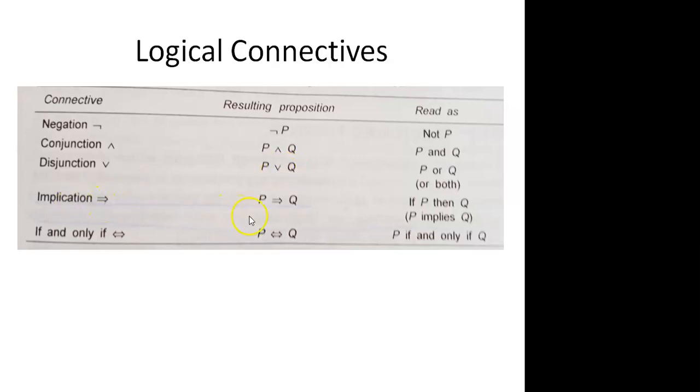Then we have implication which says P implies Q. If P is true then Q is also true. This also has a truth table. And then we have if and only if, which means if P implies Q and Q also implies P. For this we have the double implication symbol.